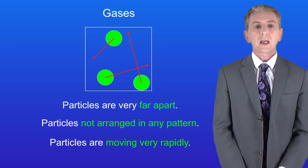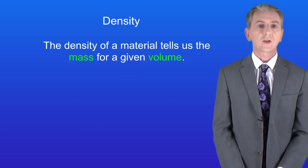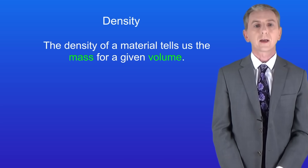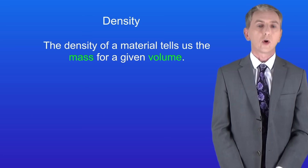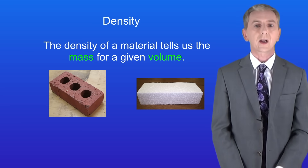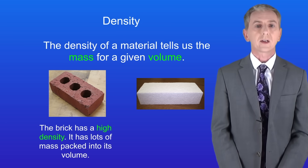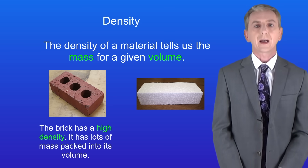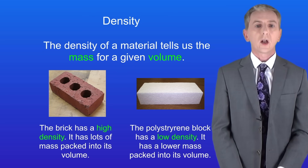We're going to take a look now at density. The density of a material tells us the mass for a given volume. I'm showing you here a brick and a polystyrene block. The brick has a high density — it has lots of mass packed into its volume. The polystyrene block has a low density because it has a lower mass packed into its volume.